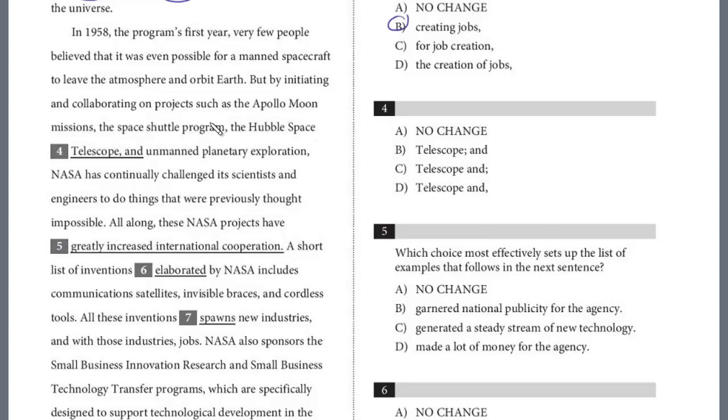So let's take a look at four. We're really listing these projects by NASA, right? The Apollo moon missions, that's one, comma. The space shuttle program, comma. The Hubble Space Telescope, comma. Then we have the Oxford comma, and the and. We're just listing these. We certainly need a comma here, not a semicolon. And that separates two independent clauses, and the Oxford comma always appears before the and, not after. And so the answer here is A, it's no change.